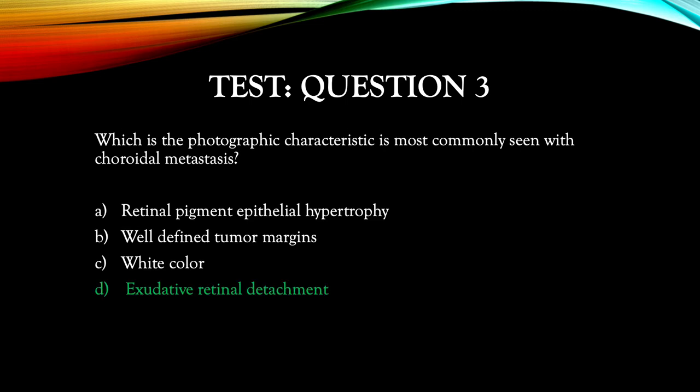The answer is D: exudative retinal detachment. Metastatic cancer to the choroid, which is usually from the breast or lung, will exhibit secondary exudative retinal detachments due to their poorly formed aneurysmal leaking tumor blood vessels.